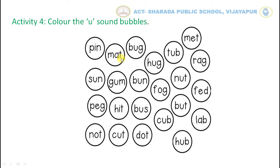Let us read the next one. Bug. Tell me children, is it a U sound word? Yes. So we have to colour the word. Like this.